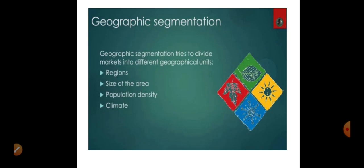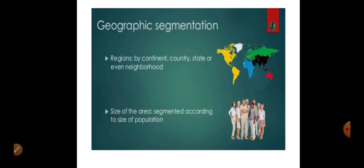For instance, if you are a clothing company, you can have two subdivisions based on climate — one segment for areas where the temperature is very low or cool most of the time, and another segment for hot areas.